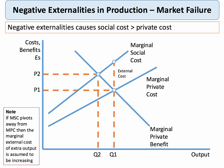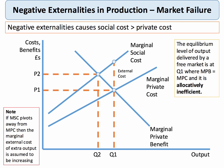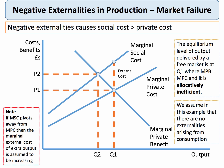P2, Q2 takes into account the negative externalities, and therefore that's the social optimum level of output. The equilibrium delivered by the free market is at Q1 — that's allocatively inefficient. We're not making best use of our scarce resources because of the externalities, and we assume in this case there are no externalities from consumption. So the social optimum is at P2, Q2, where we take into account the externalities.